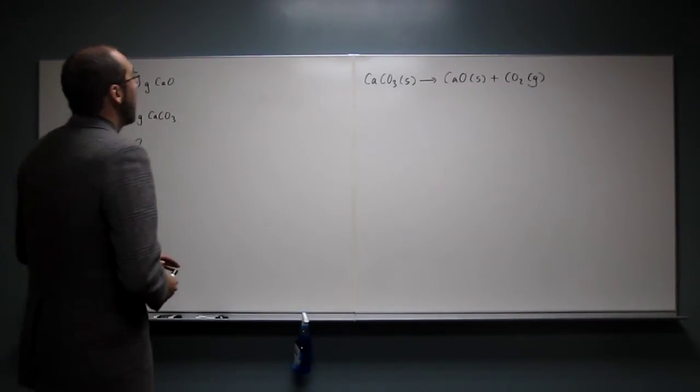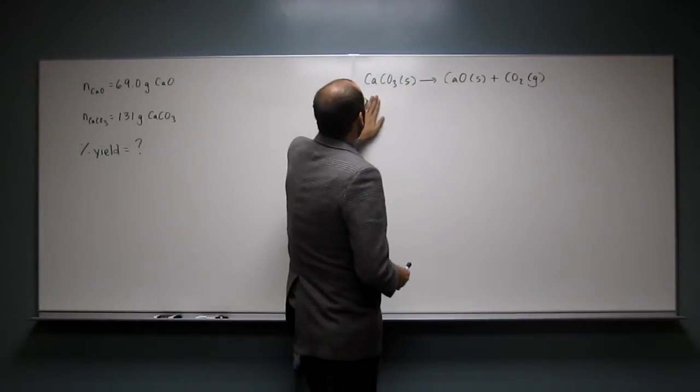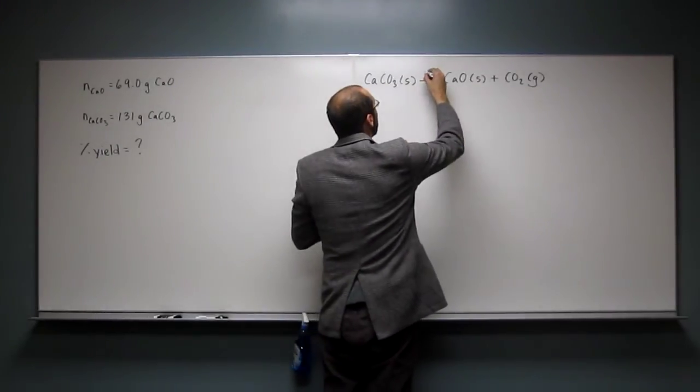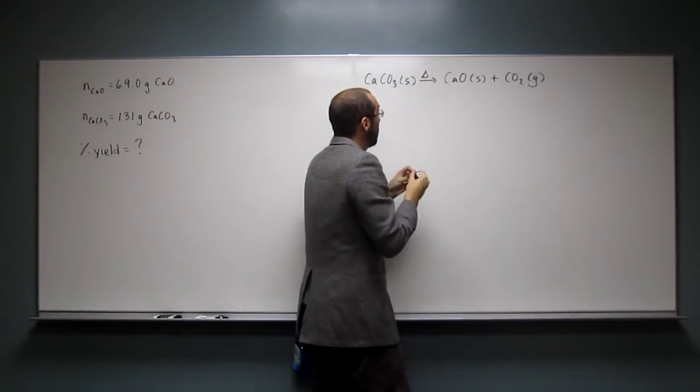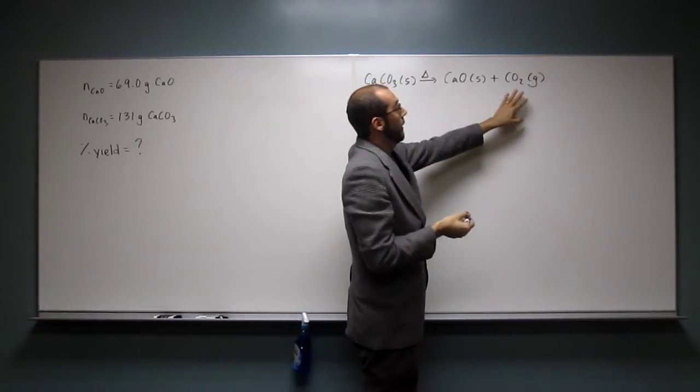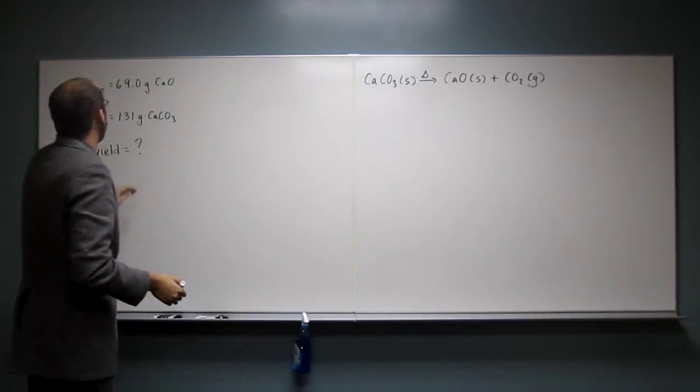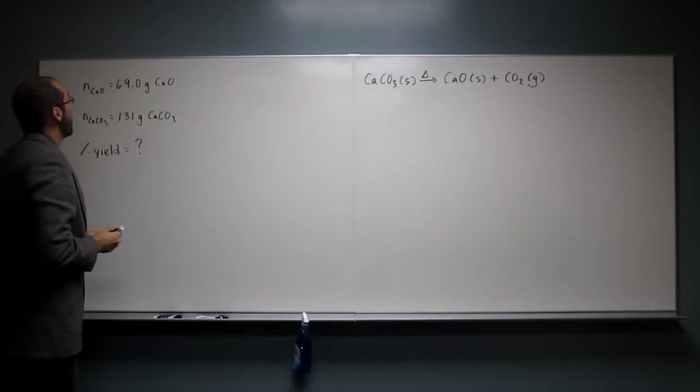I've taken the liberty to write down the reaction. Calcium carbonate solid is heated up to form calcium oxide and carbon dioxide goes away. So we're left with 69.0 grams of calcium oxide.